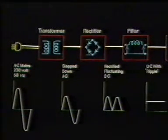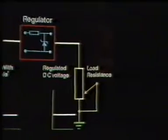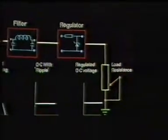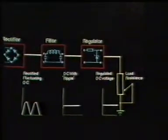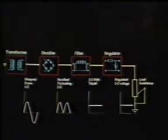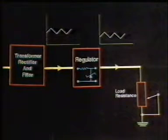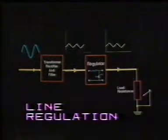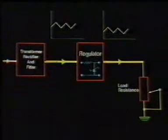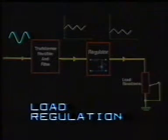To avoid variations in the output voltage, a regulation device is necessary. The ability of a power supply to keep output voltage constant against fluctuations in input line voltage is called line regulation. The power supply's ability to keep output voltage constant against variation in load current is known as load regulation.